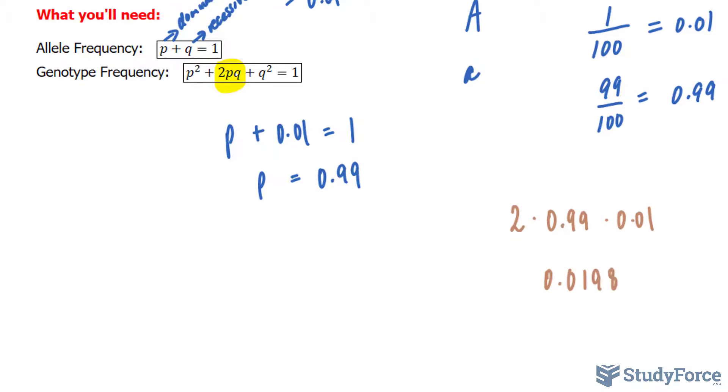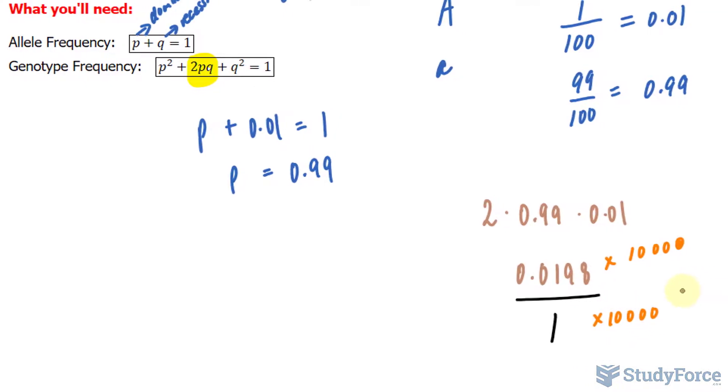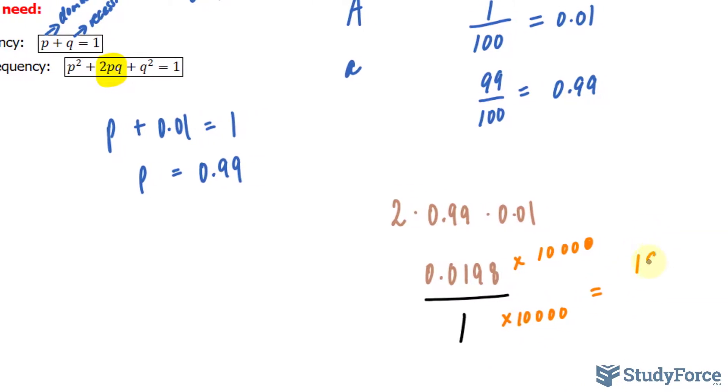And if we convert this into a fraction by making it over 1, then multiplying the top part of the fraction and the bottom part of the fraction by a factor of 10,000, those four zeros will make the top number into an integer. This gives us 198 over 10,000.